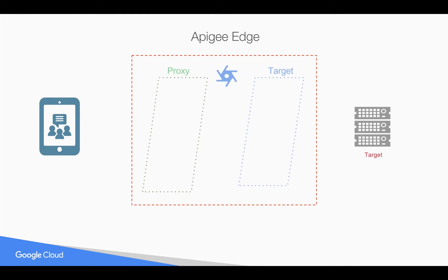As you know, Apigee sits in between the client and target server. When you create an API proxy it is divided into proxy endpoint and target endpoint. Whenever a request comes to Apigee Edge for that particular proxy endpoint, you can execute a bunch of policies to modify the behavior of the API before you forward the request to the target server. By default, whenever a request comes in, the same request is forwarded to the target no matter which particular API it is.